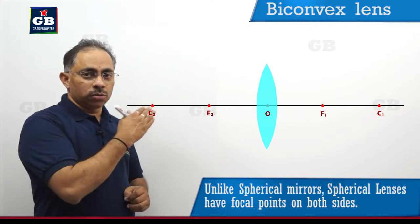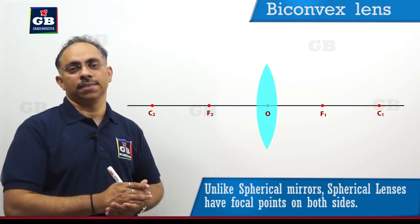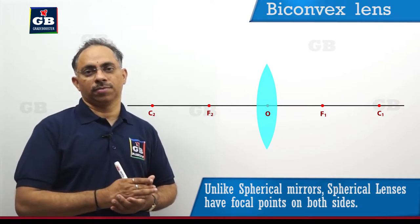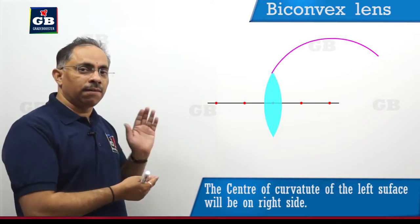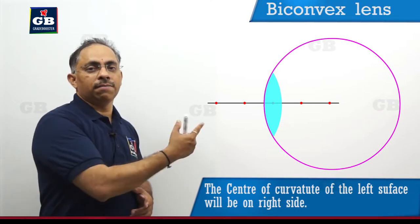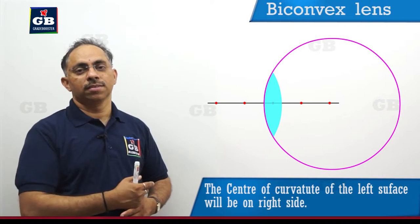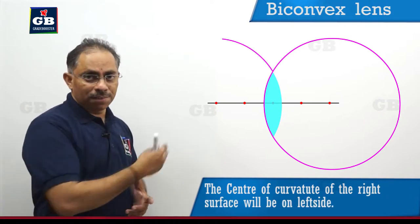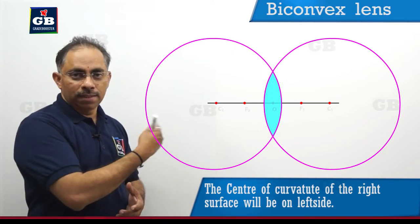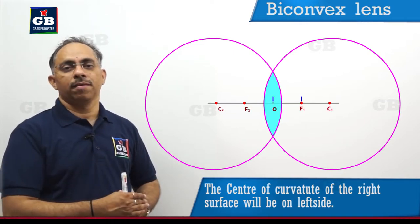These two surfaces of the lens are curved surfaces. So these two will have some center of curvature. For the surface which is on the left side, which is bulged out on the left side, we will have center of curvature on the right side. For the right side surface, which is bulged out on the right side, the center of curvature will be on the left side.